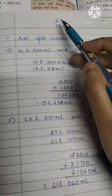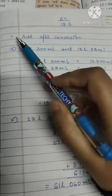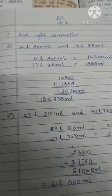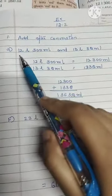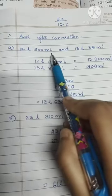My dear students, wishing you all a very happy new year. Hope you enjoyed your new year. So today we will begin with exercise 12.2. Coming to exercise 12.2, question number one: add after conversion. Part a: 12 liter 300 ml and 13 liter 38 ml.